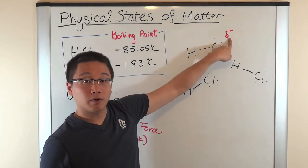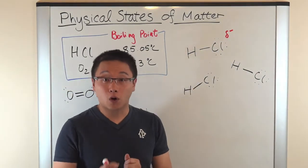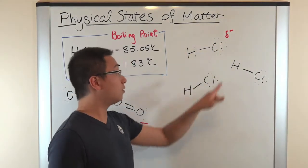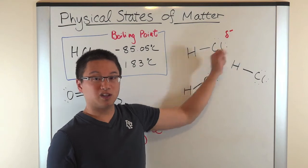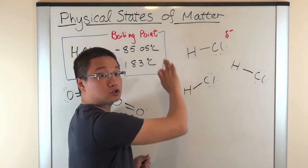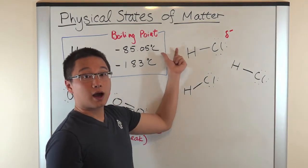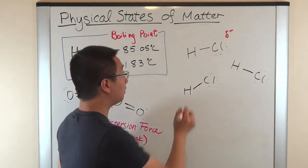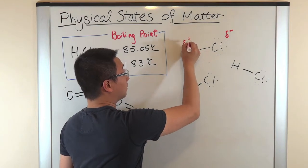So, now, this symbol here, it's called delta. It means partially or slightly. So, this end of the molecule is slightly, partially negative. And as the electron leans toward the chlorine, the hydrogen becomes partially, or slightly, positive.